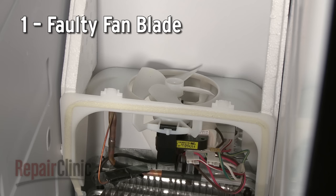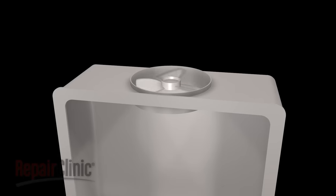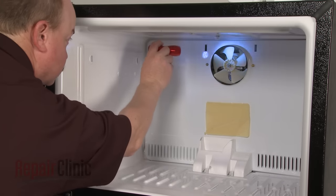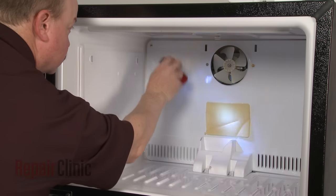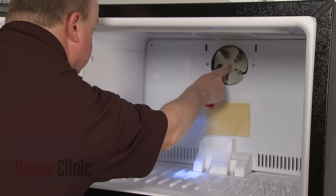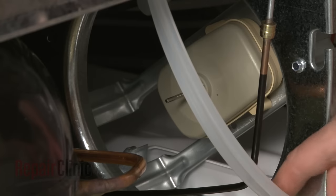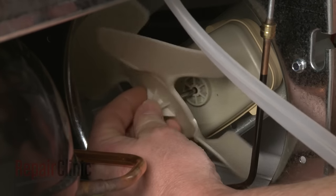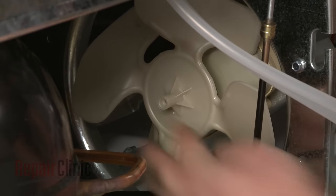The condenser fan motor blade or evaporator fan motor blade could be damaged or scraping against a panel or bracket. You should check both blades to determine if they are obstructed or if they can turn freely. Both the condenser fan blade and the evaporator fan blade can be replaced independently of the motors.